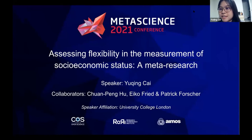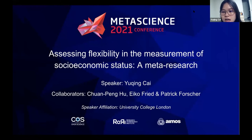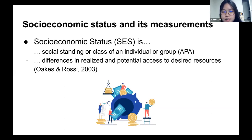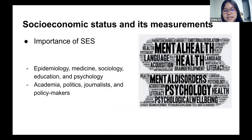Hi, everyone. My name is Yuching Cai, and today I'm going to present research about the measurement flexibility of socioeconomic status, which is by me and three other collaborators. So it is meta-research. Socioeconomic status, or SES, is the social standing or class of an individual or group of individuals — it can represent the accessibility of resources for different units of individuals.